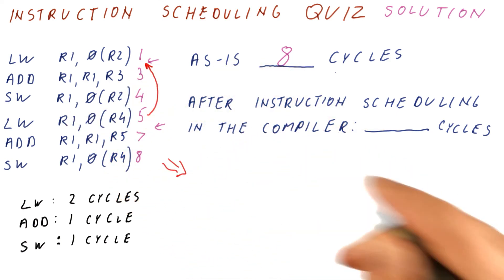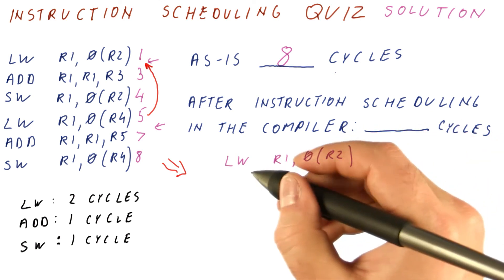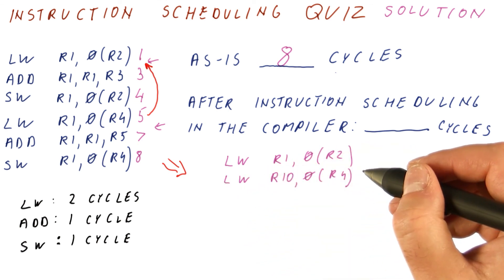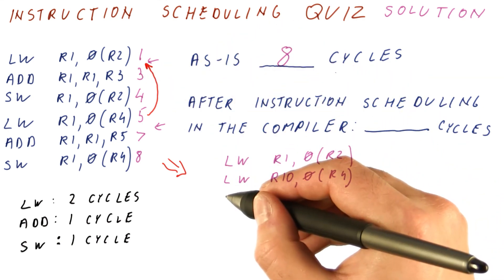So the program becomes now load word R1, zero of R2 as before. Now we move the other load there, put the result in some R10, let's say. Now we can do this add, because in the third cycle we can do it.